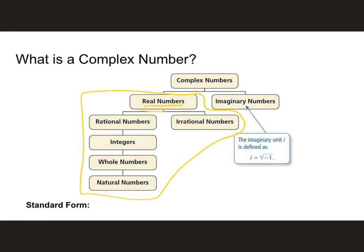Real numbers, as you know, we can divide into rational numbers and irrational numbers. Rational numbers are numbers that can be written as a fraction, and irrational numbers can't. Like my favorite number, pi, is an irrational number — so is the square root of 2. Rational numbers are like 3/4, 2, and negative 17 — numbers that can be written as a fraction.